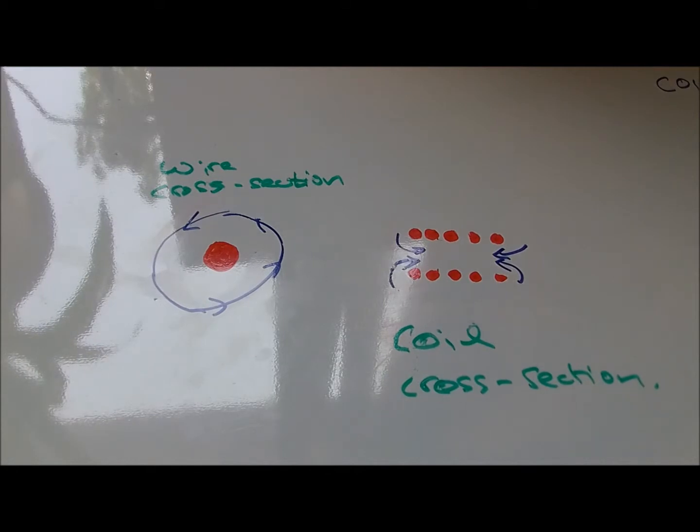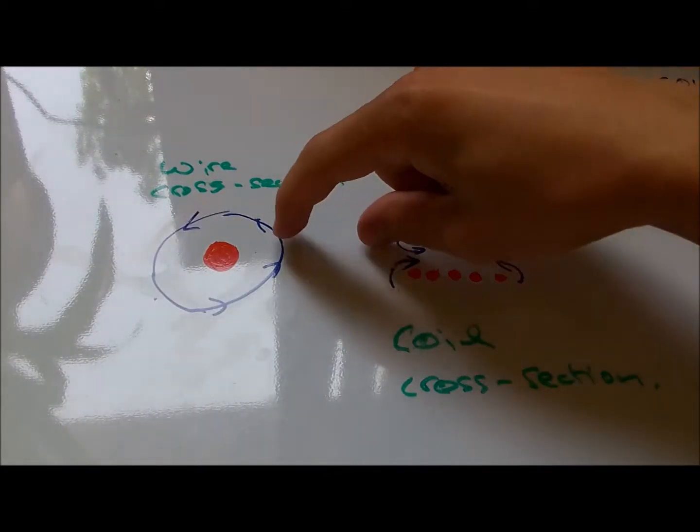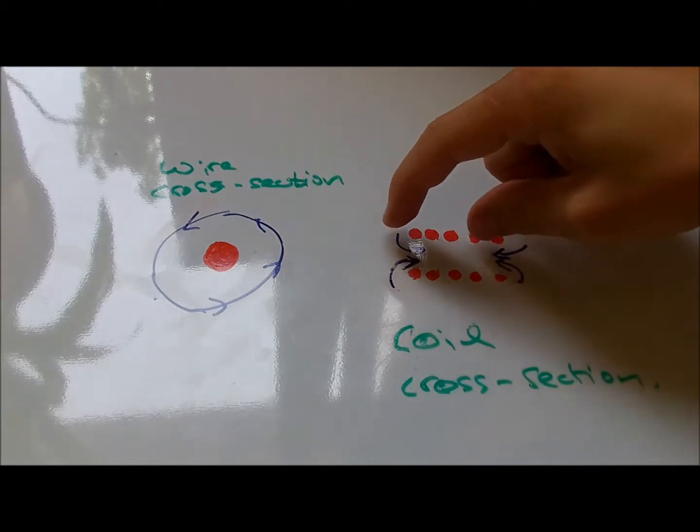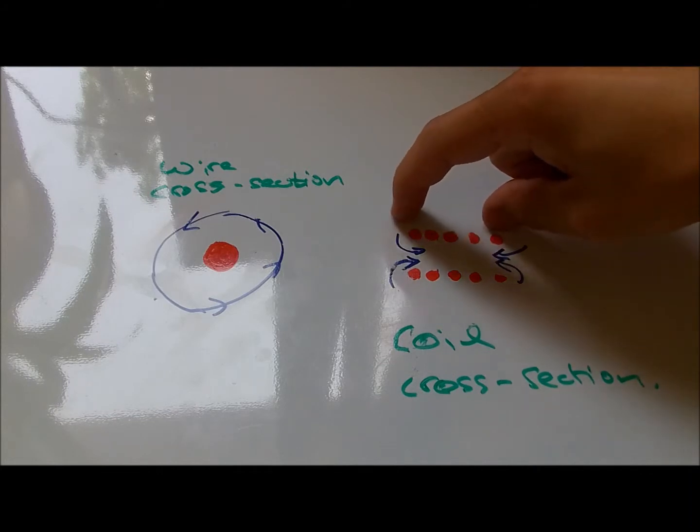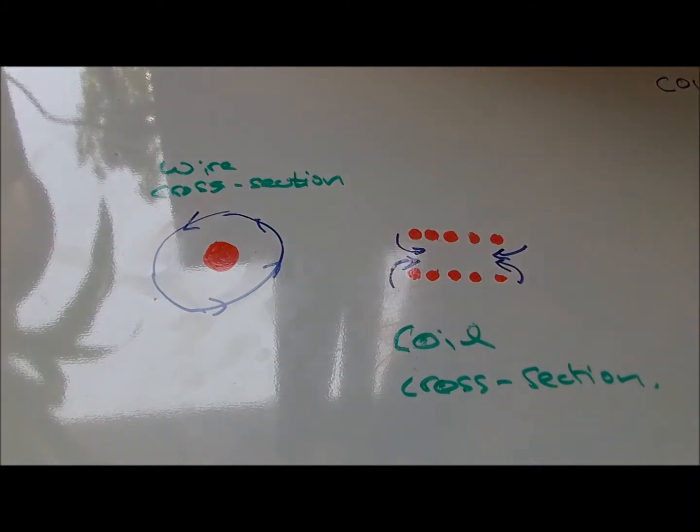The way we use this for the coil gun is - say we put it on one side, we activate the coil, it gets sucked in, and what we need to do now is switch off the pulse, switch off the coil, and the projectile flies out with the momentum that it already has. This is the main issue with the coil gun - the pulse timing.